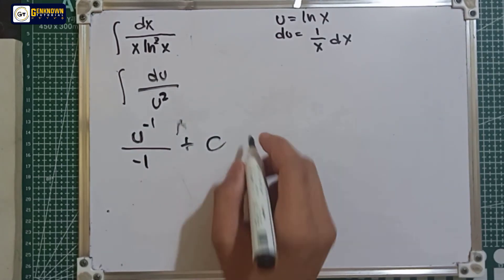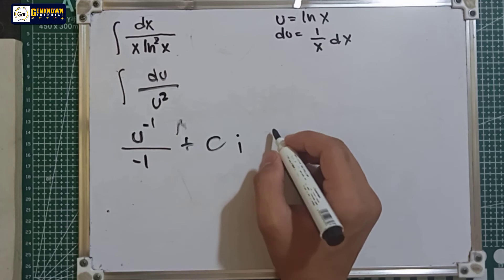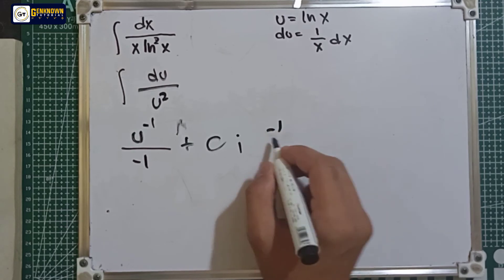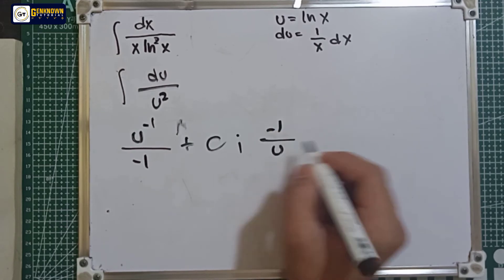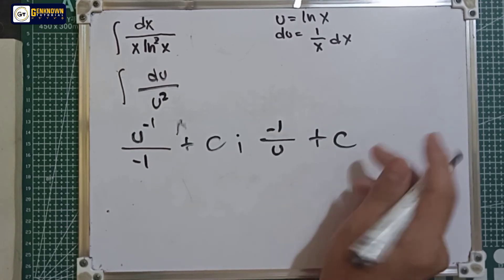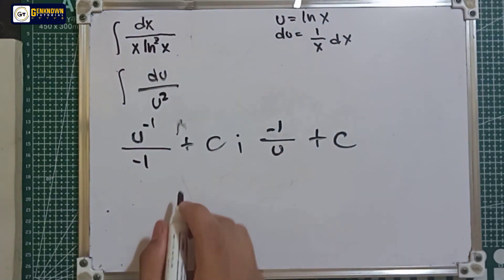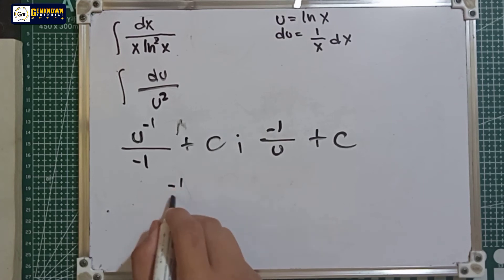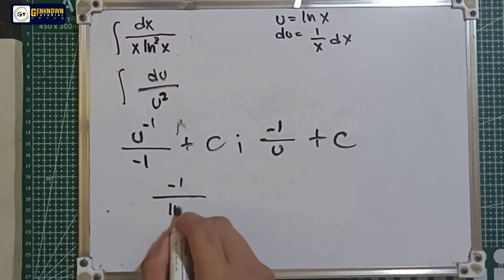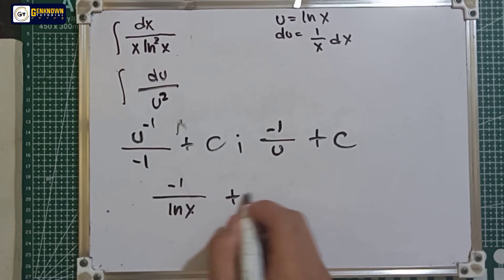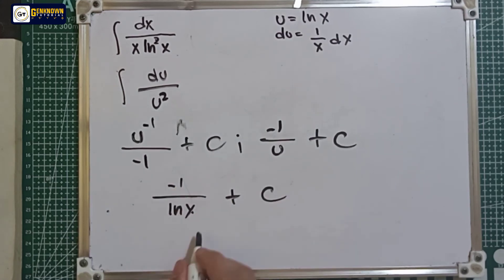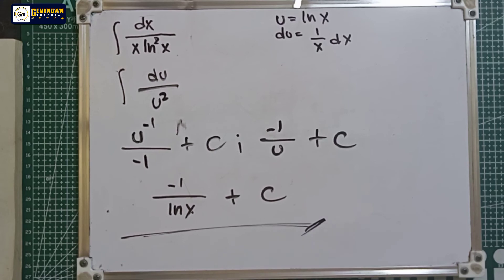This simplifies to negative 1 over u plus the constant. Substituting back the value of u, we get negative 1 over ln x plus the constant. This is the final answer for number 9.